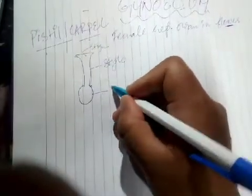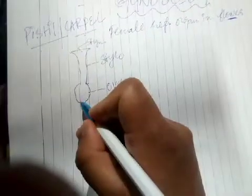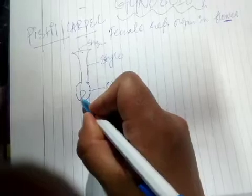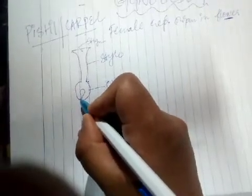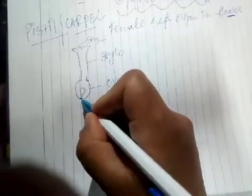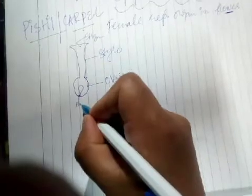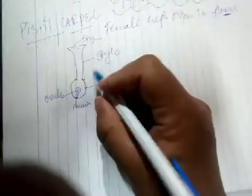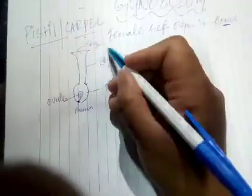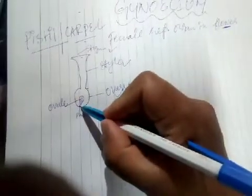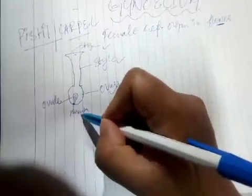Inside the ovary, ovule is present, and that ovule is attached to a cushion-like structure which is called as the placenta. So the part where ovule is attached is called placenta. So pistil or carpel has parts: stigma, style, ovary, ovule, and the ovule is attached at placenta.